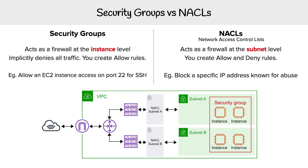Looking at security groups, they act as a firewall at the instance level, whereas NACLs act as a firewall at the subnet level. In that diagram, you can see that all those instances are contained within a security group and they can span multiple subnets, whereas the NACLs sit in front of the subnets and control access in and out from subnets.